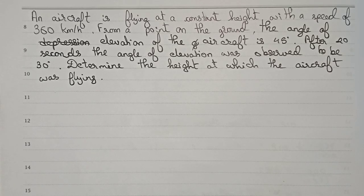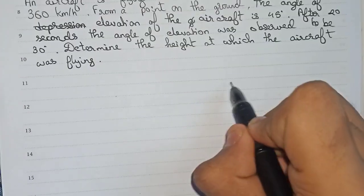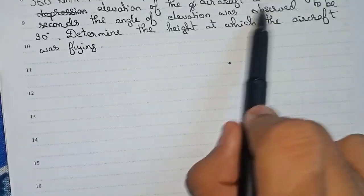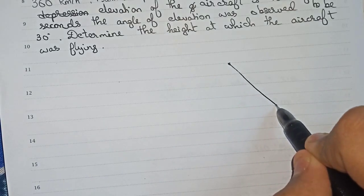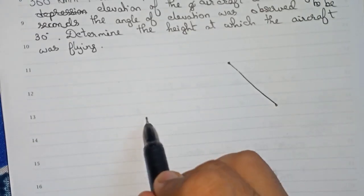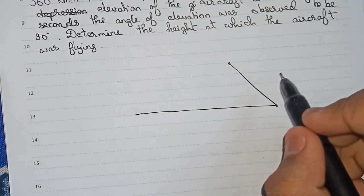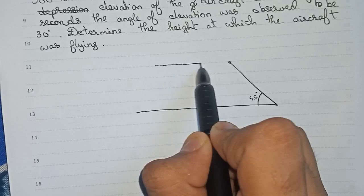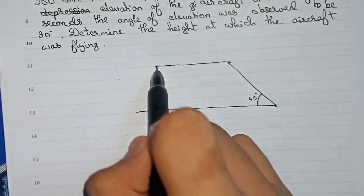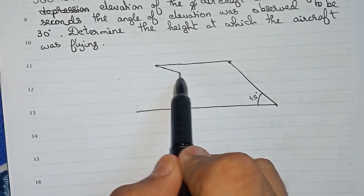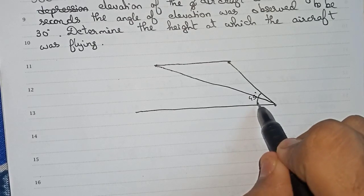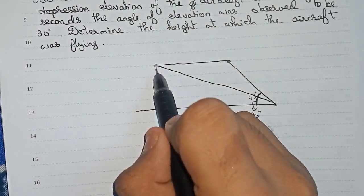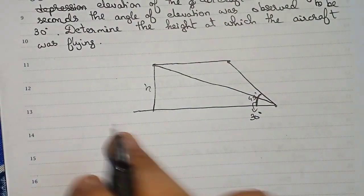So this is our question. First, we will draw a diagram. Let this be our aircraft at a moment — at a particular time, the angle of elevation from a point is 45 degrees. After 20 seconds, the aircraft has flown further, and the angle of elevation is now 30 degrees. We need to calculate the height h.